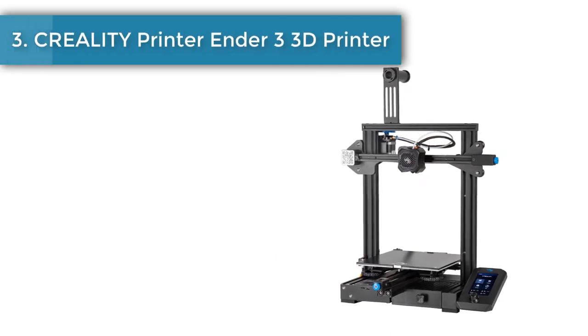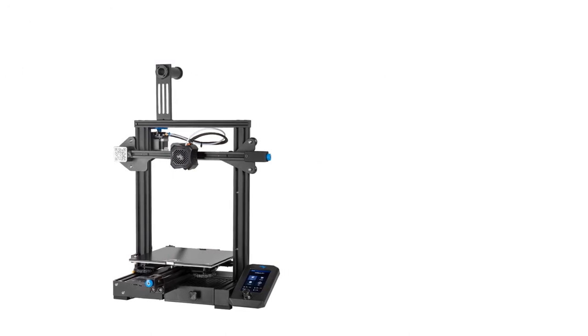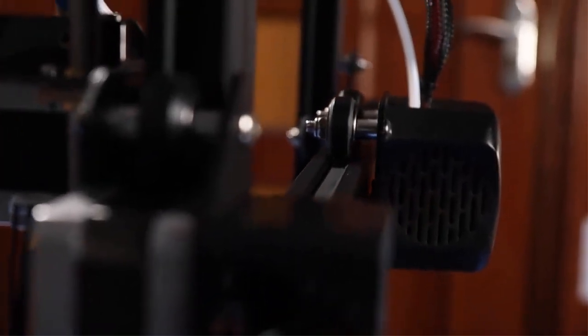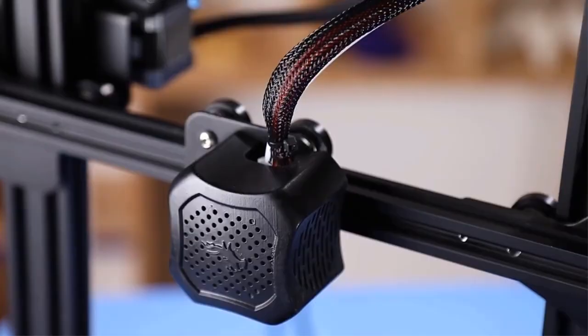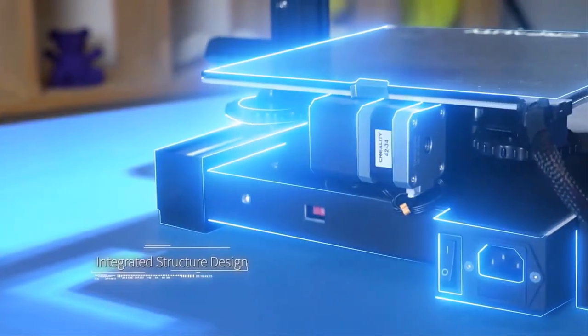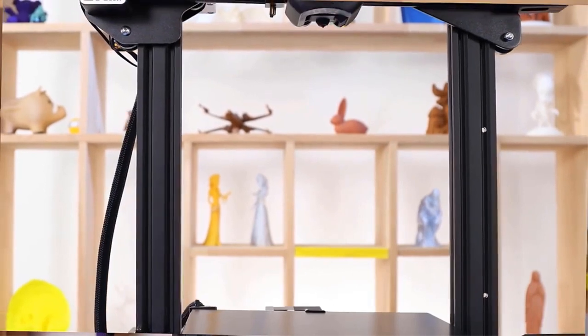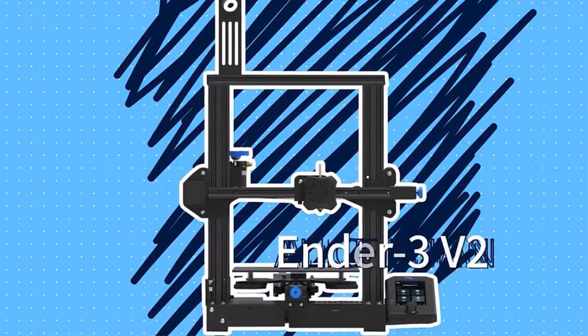Number 3. Creality Printer Ender 3 3D Printer. Creality Ender 3 3D Printer equipped with super-quiet printing designing, with smooth adjustable pulley, and if a power is accidentally cut off during printing, accurate printing can be continued after power is switched on. With the power supply protection device and resume printing function, no need to worry about the accidental outage, avoiding the waste of filaments.